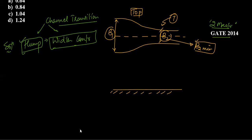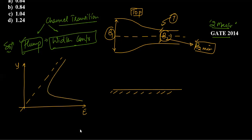Let's look at the specific energy versus depth graph. On the y-axis we have depth, on the x-axis we have specific energy. We plot multiple curves since the discharge per unit width q changes as the width changes. At section 1, q1 = Q/B1, and at section 2, q2 = Q/B2. Since B2 is smaller, q2 is larger than q1, so we get multiple E-y curves for different q values.